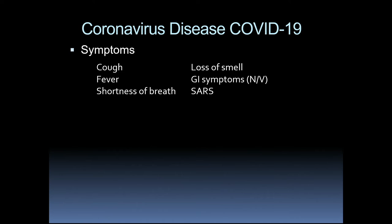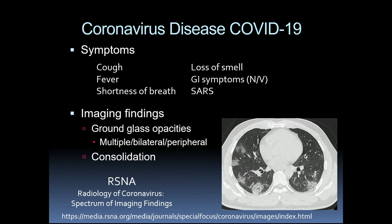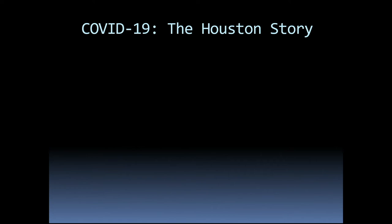The symptoms we are all familiar with: cough, fever, shortness of breath, loss of smell, and GI symptoms. The worry is that in certain select patients it can result in SARS — acute respiratory distress syndrome — and result in severe illness, hospitalization, ICU admission, and possibly death. The imaging findings were very interesting when first being discovered. Very characteristic of SARS and coronavirus were ground glass opacities, tending to be nodular in configuration, peripheral in distribution, with areas of superimposed consolidation. This was first published in the RSNA journals in an article entitled Spectrum of Imaging Findings for Coronavirus, SARS Coronavirus.